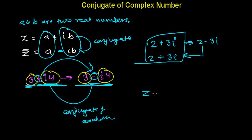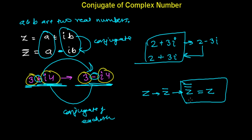If you take the conjugate of z to get z-bar, and then take the conjugate of z-bar again — the double conjugate — you get back z. Keep that in mind: if you do the double conjugate of a complex number, you're going to get the same initial complex number. We have certain properties of the conjugate of a complex number, which we're going to learn in the next video.